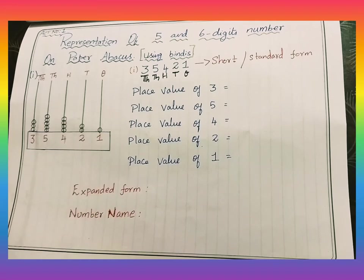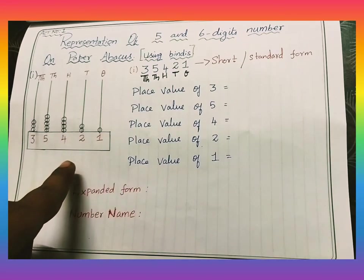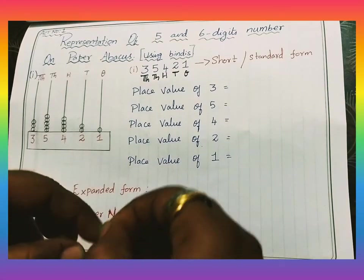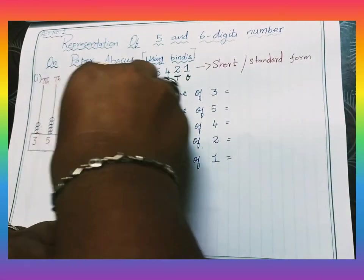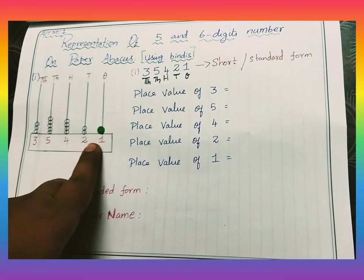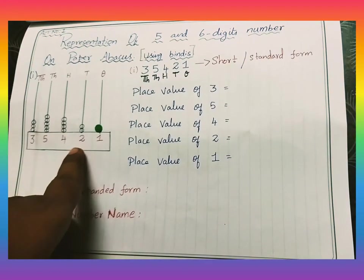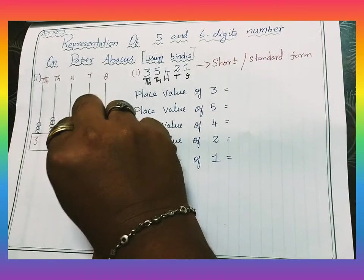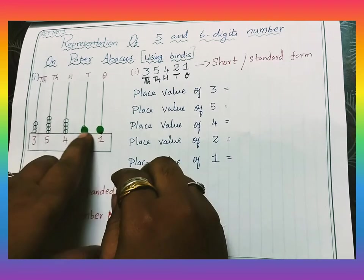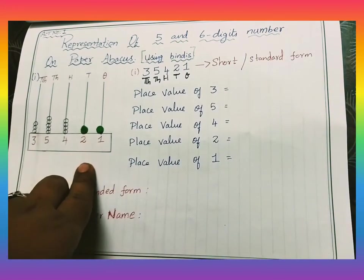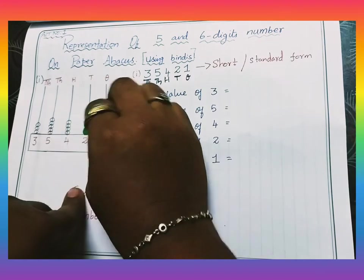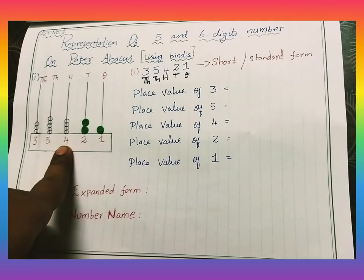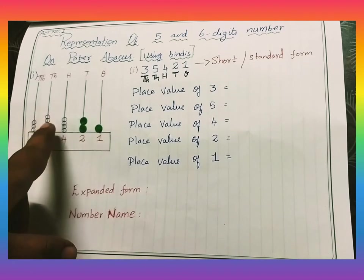According to the number, we are going to stick the bindis on the abacus. Instead of beads, we are going to stick bindis. There is one in the ones place, so stick one bindi. In the tens place there are two, so stick two bindis — they are sticker-type bindis. Next, four bindis for hundreds, then five bindis for thousands.